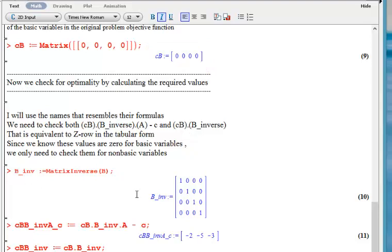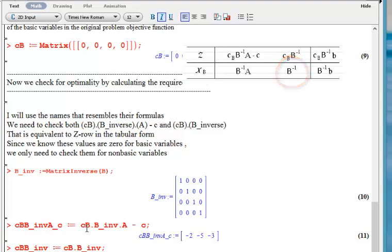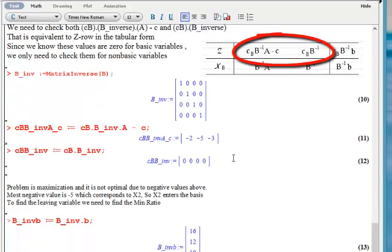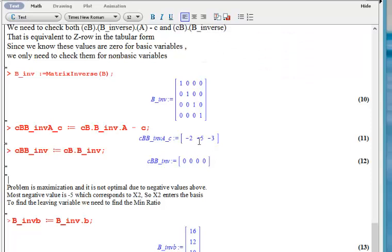Then we will do the calculation. We will find B inverse, we will find CB B inverse A minus C, and we will find CB B inverse. These two values are the optimality conditions. They identify whether the problem is optimal or not. In this case, I have negative 2, negative 5, negative 3, and 0, 0, 0, 0, which by having negative values in a maximization problem means the problem is not optimal. Picking up the most negative value, which is related to X2, X2 is going to be my entering variable.